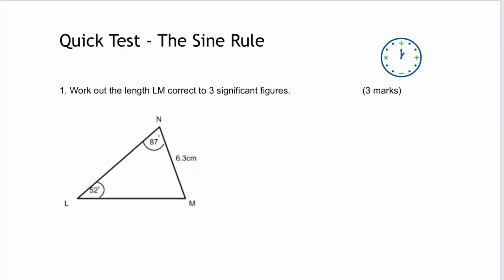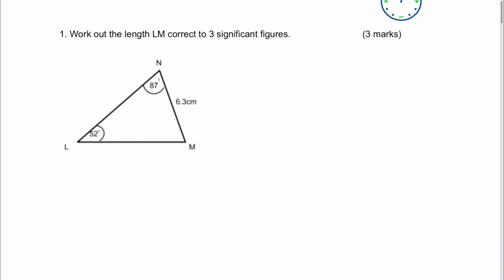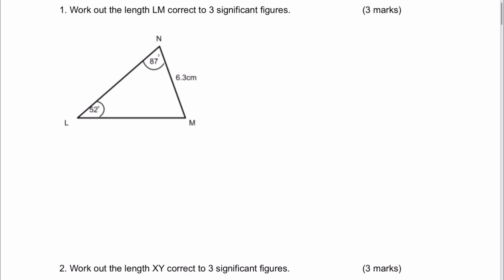In this particular video we're going to be looking at the sine rule, and the first question is: calculate the length LM correct to three significant figures. So they're looking for this length, which I'm going to call A. The way I would write the sine rule is A over sine A equals B over sine B. With a lot of these types of questions you'll get letters like LM and N — if you want, just overwrite them with your own labels.